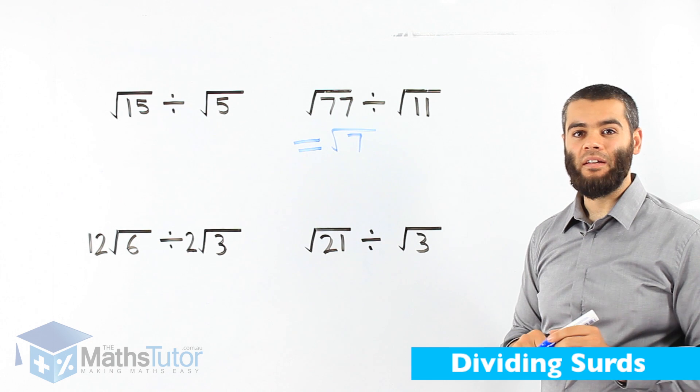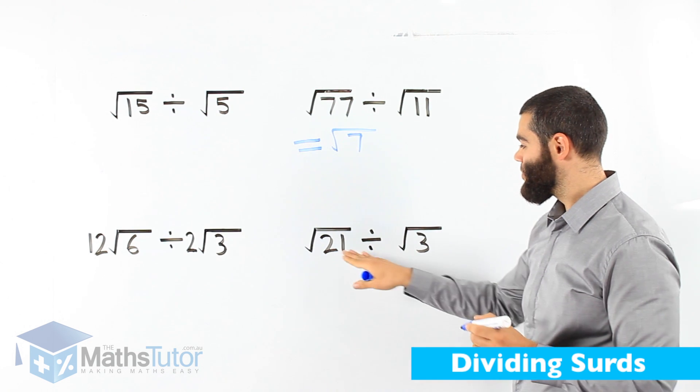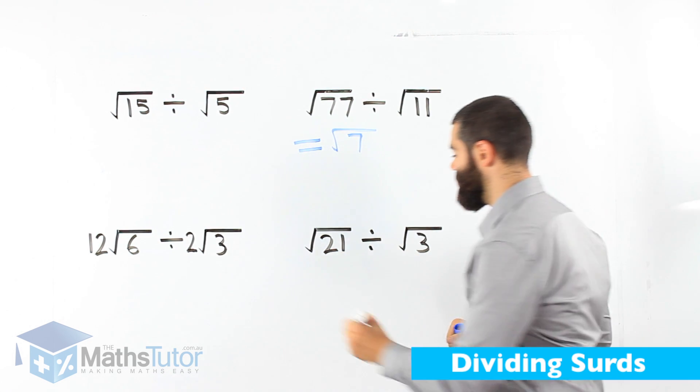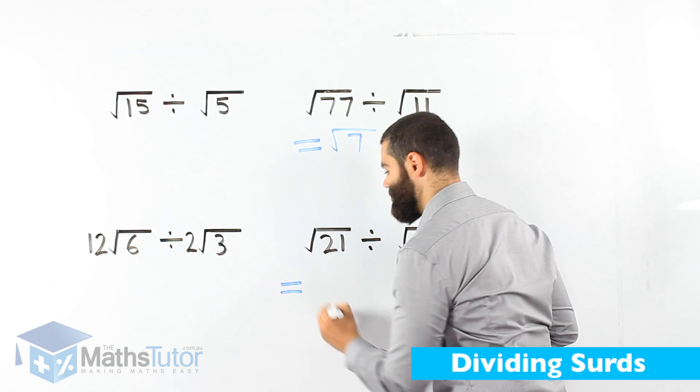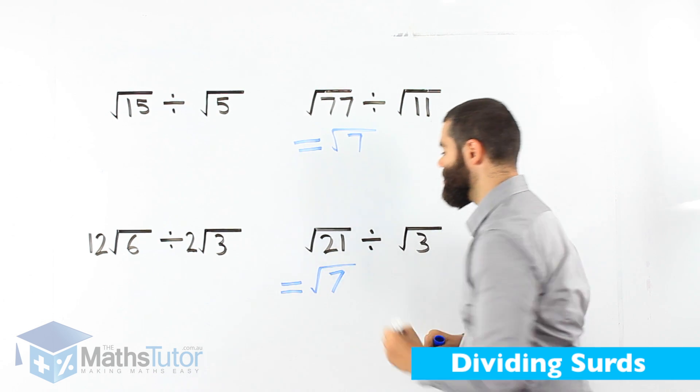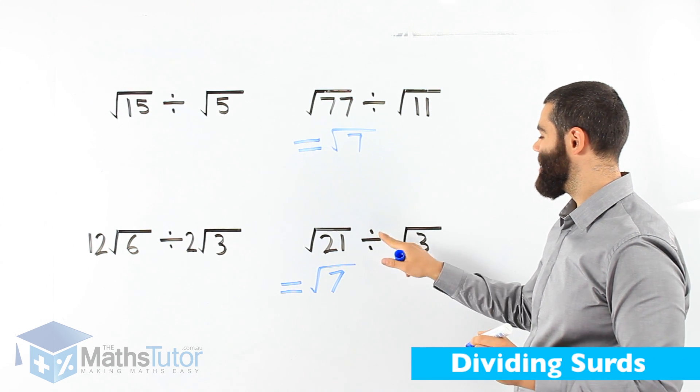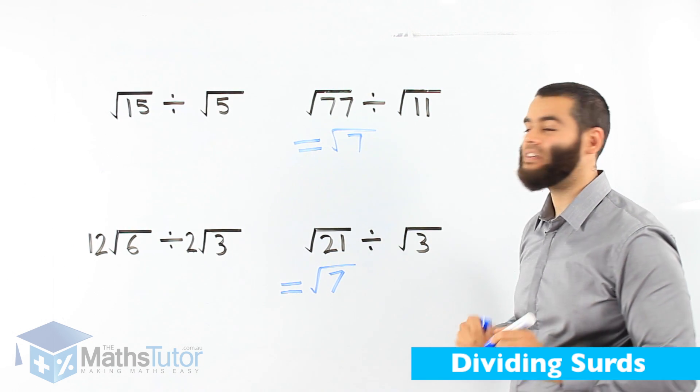Next one. Root 21 divided by root 3. 21 divided by 3 is 7. Our answer is root 7.